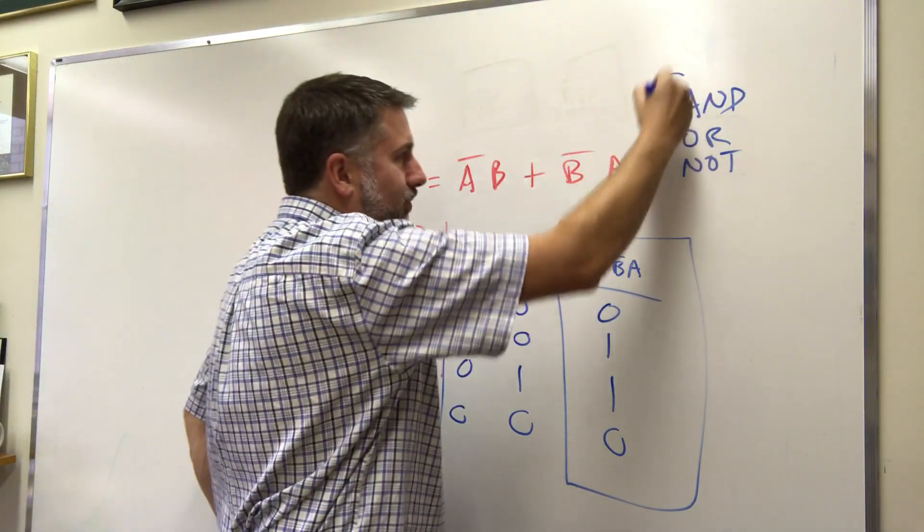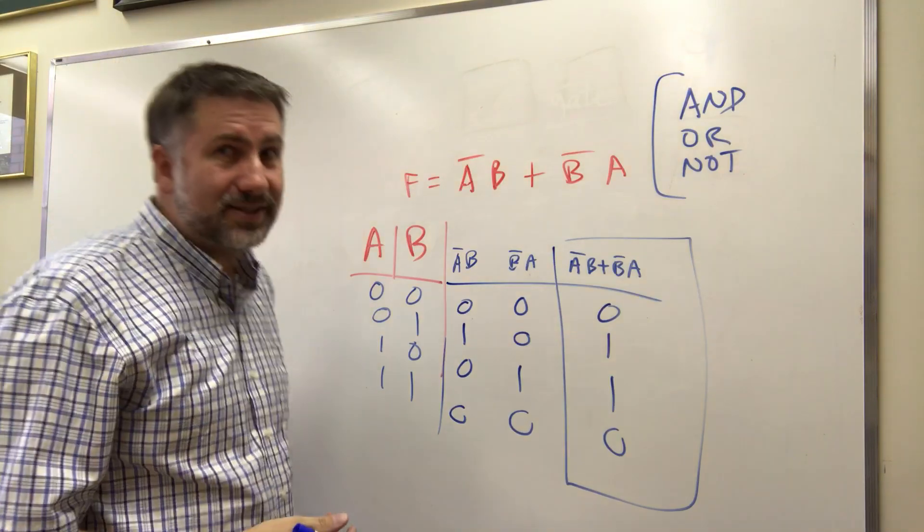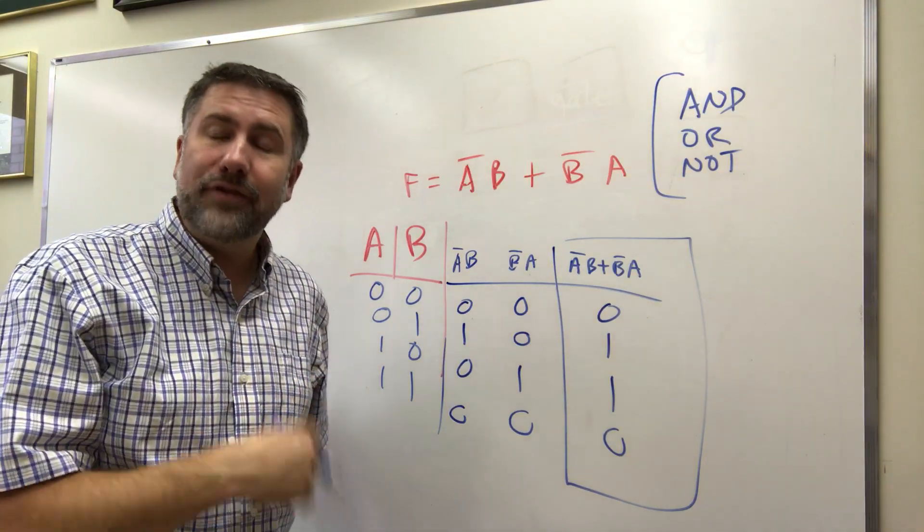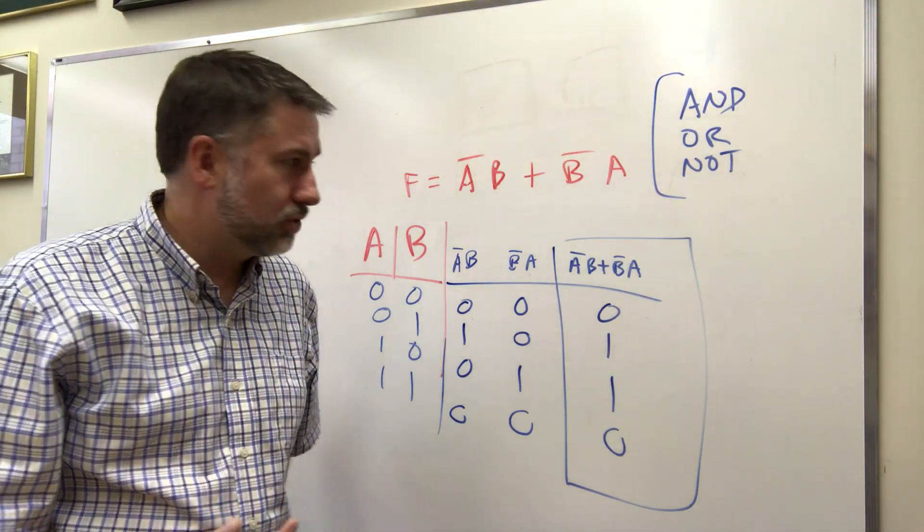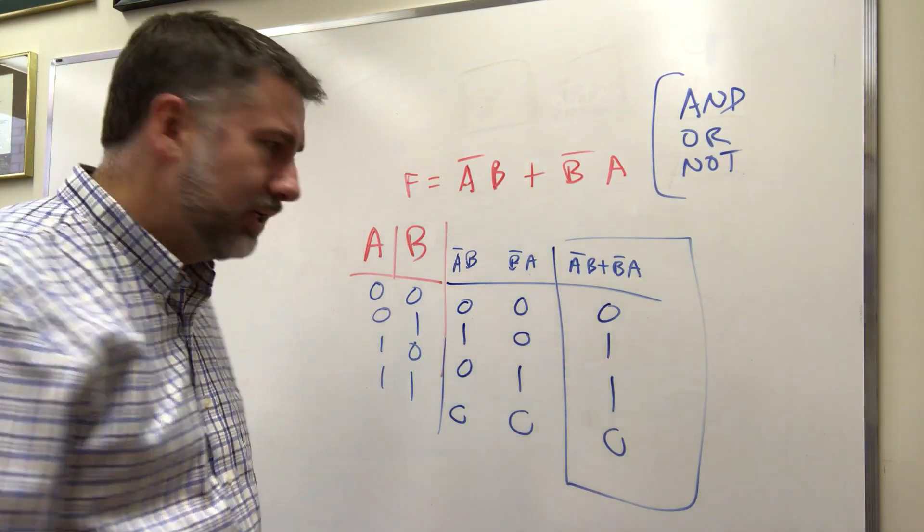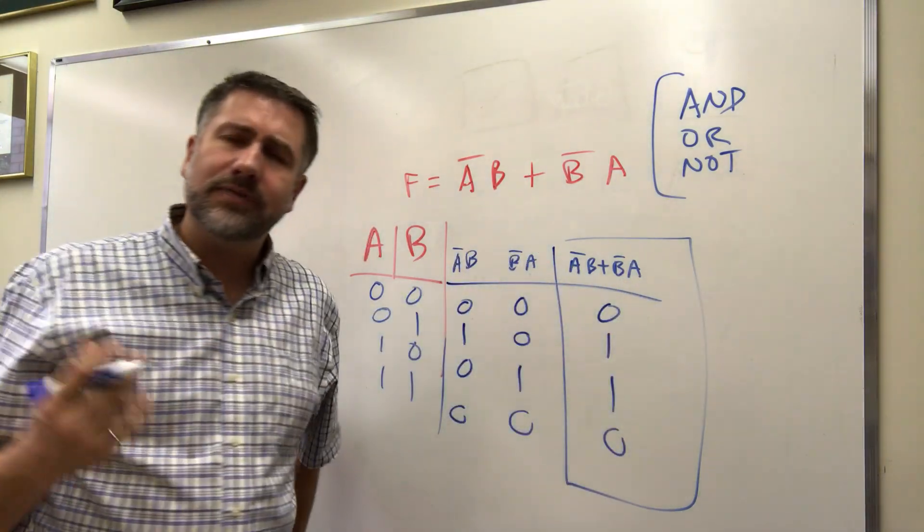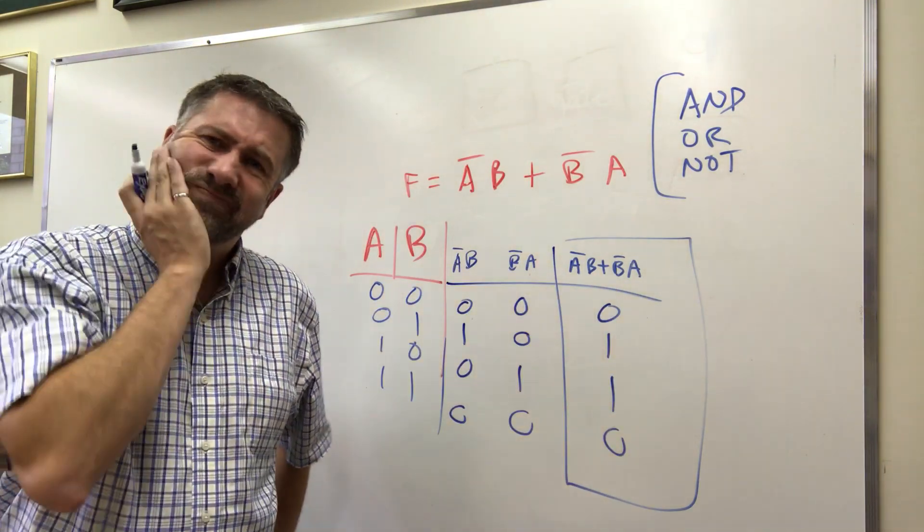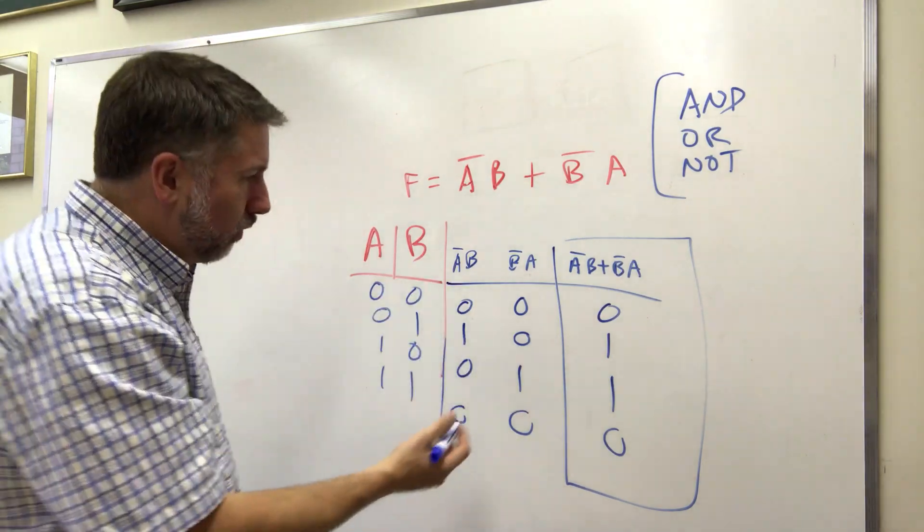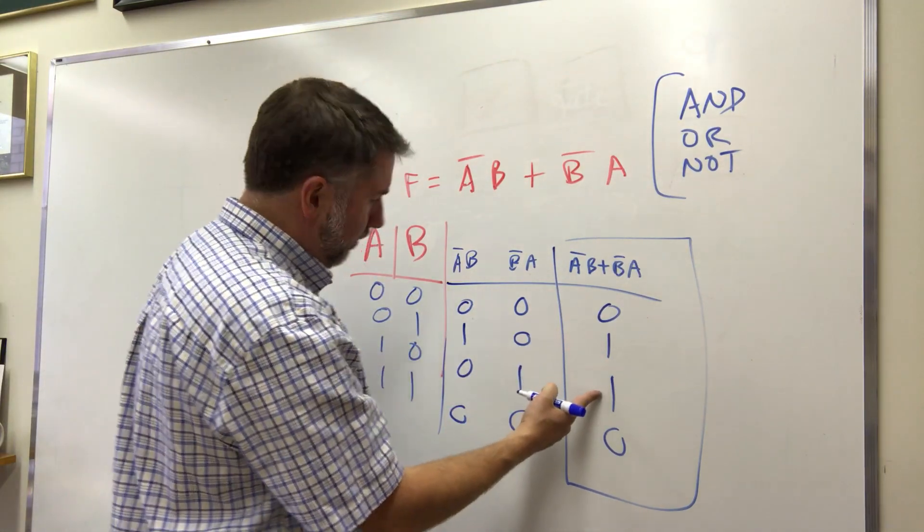One one zero, so this is the output of that function given any possible input combination. If we don't allow anything except and, or, not it may be that that's the simplest we can get. But if we look at some of the other gates that we have options to, some of the gates we have access to, does this look like any of the gates from that set of 16?